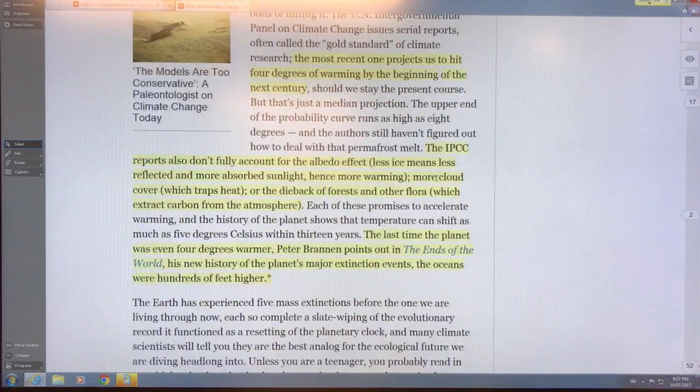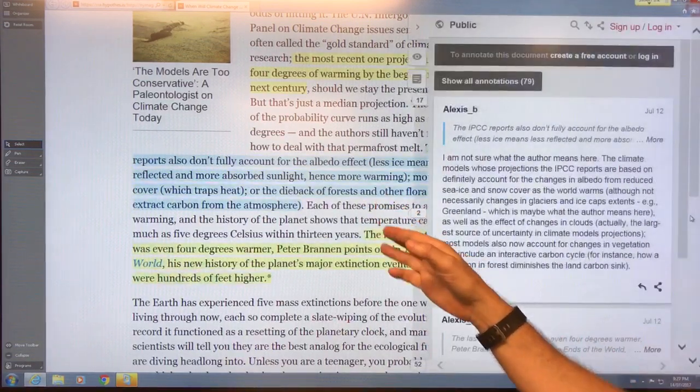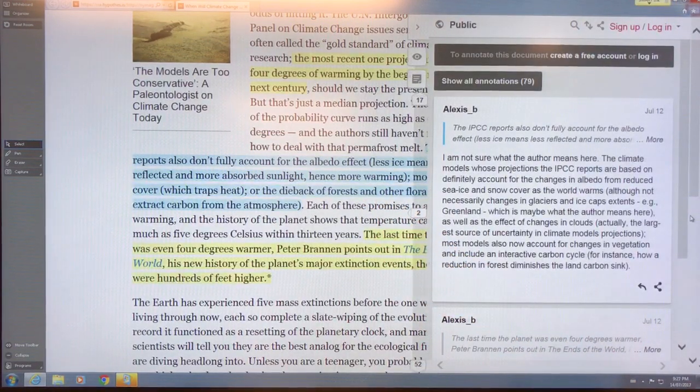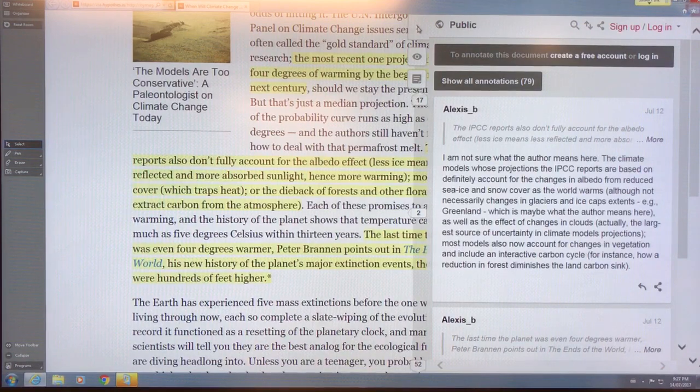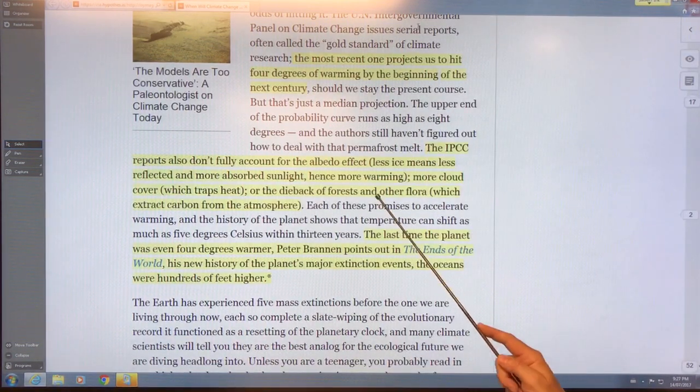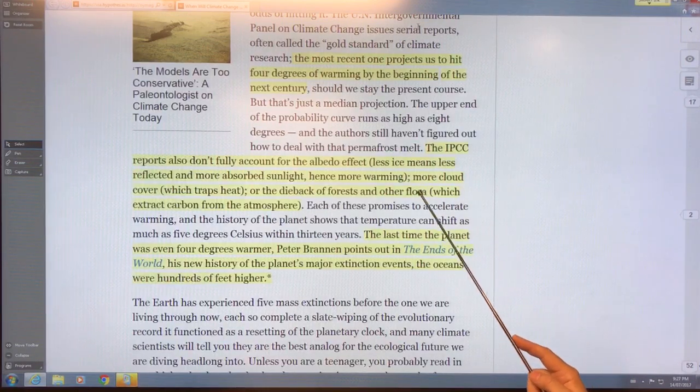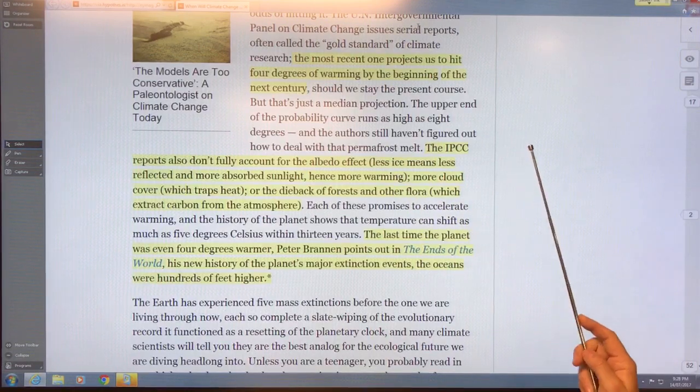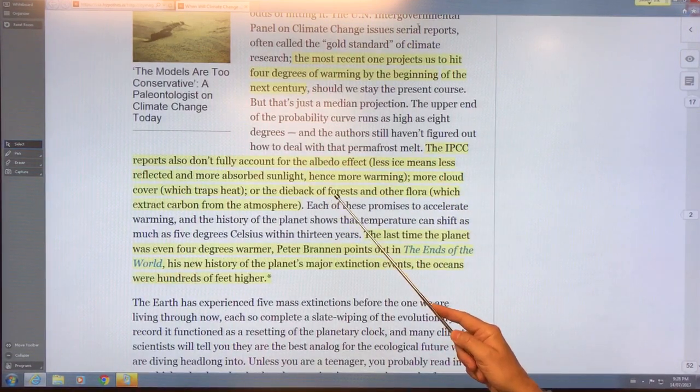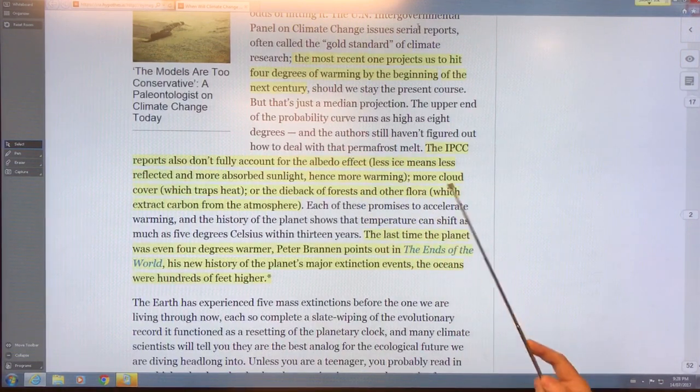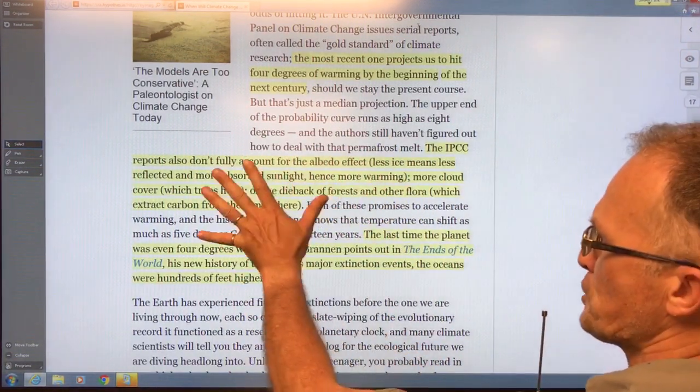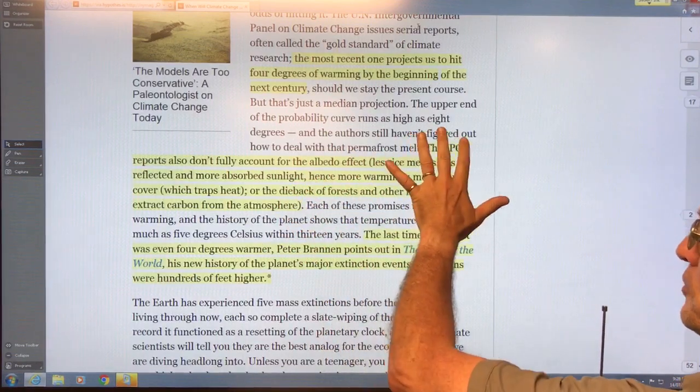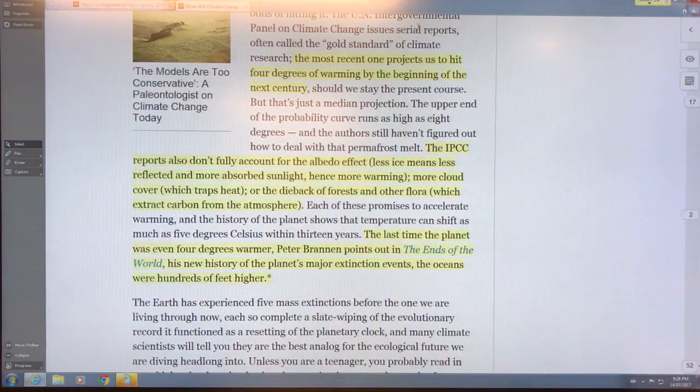Here we go. There's a couple comments here. The IPCC reports don't fully account for the albedo effect. They don't account for the Arctic warming, they don't fully account for the methane release, they don't account for loss of carbon, all these losses, diebacks of forests. All these things are happening much faster than the models. These are very conservative models, so everything's moving much faster, everything is shifting much faster.